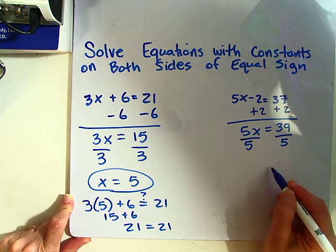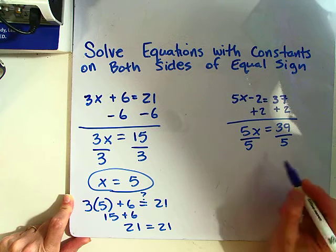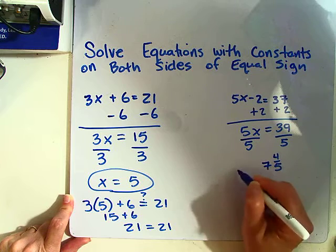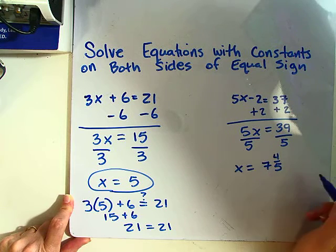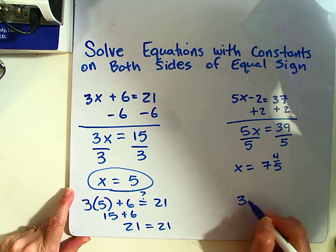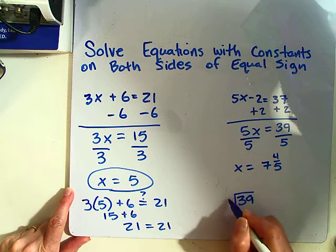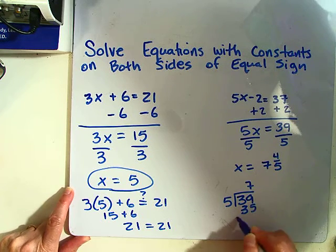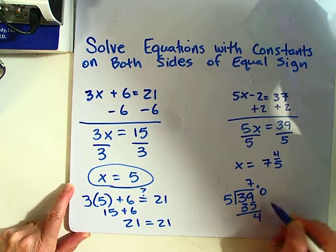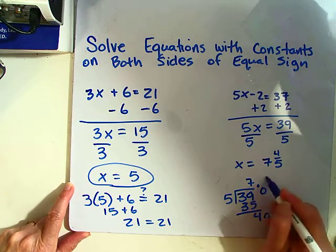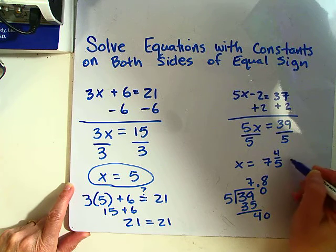If I write it as a fraction, 5 will go into 39 seven times with 4 left over. So x equals 7 and 4 fifths. If I write it as a decimal, add a decimal point, bring down a 0. 5 goes into 40 eight times, so x can also be 7.8.